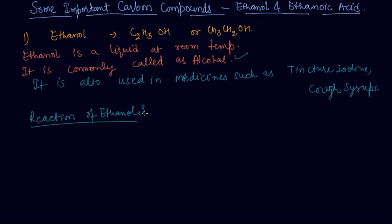So when ethanol reacts with sodium, 2Na + 2CH3CH2OH gives 2CH3CH2O- Na+ plus H2.